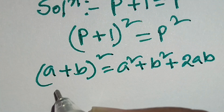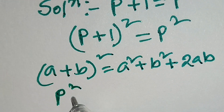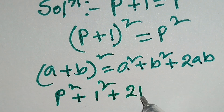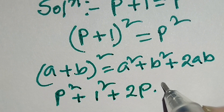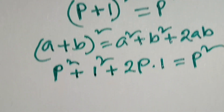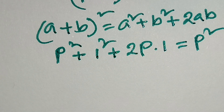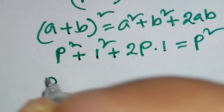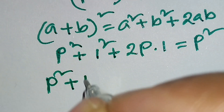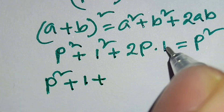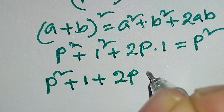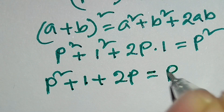p squared plus 1 squared plus 2p times 1 is equal to p squared. Here, p squared plus 1 squared is equal to 1, plus 2p times 1 is equal to 2p, is equal to p squared.